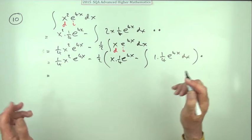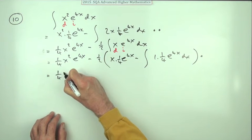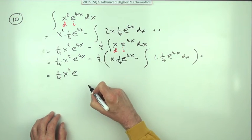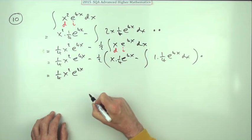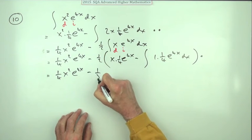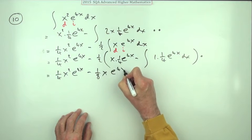Now we just need to tidy it up again. And here it gets written down again. A quarter of x squared e to the 4x. Minus. And that'll be an eighth of x e to the 4x.